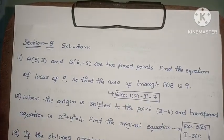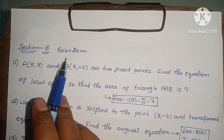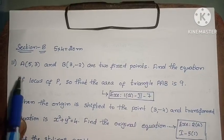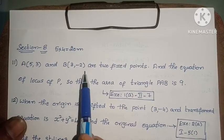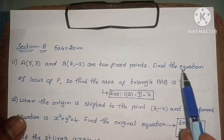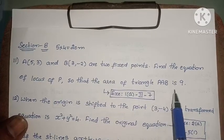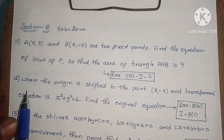Next, Section B. There are 7 problems. You need to answer 5 problems. Each has 4 marks, so total is 20 marks. Eleventh question: A (5, 3) and B (3, -2) are two fixed points. Find the equation of locus of P so that the area of triangle PAB is 9. Exercise 1, second roman law, seventh one.